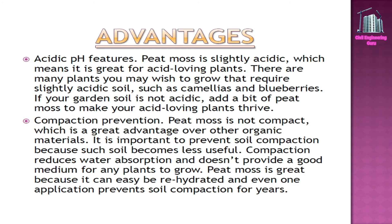Acidic pH features: Peat moss is slightly acidic, which means it is great for acid-loving plants. There are many plants that require slightly acidic soil, such as camellias and blueberries. If your garden soil is not acidic, add a bit of peat moss to make your acid-loving plants thrive.